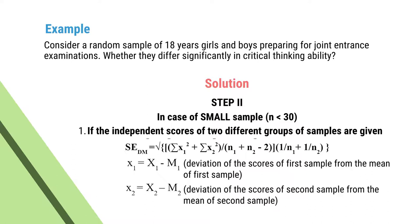Here, x1 equals X1 minus M1 — that is, the deviation of each score of the first sample from the mean of the first sample. Similarly, x2 equals X2 minus M2 — that is, the deviation of each score of the second sample from the mean of the second sample.